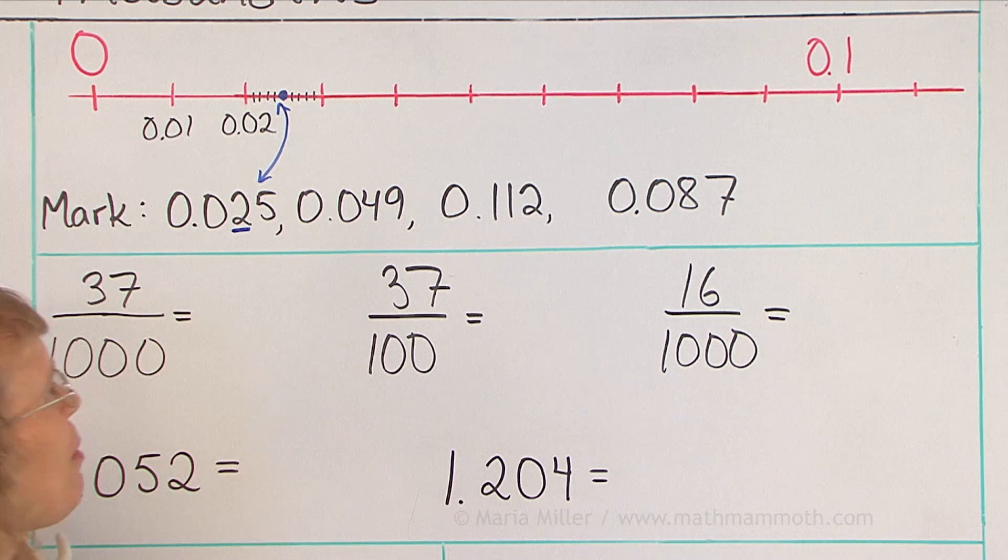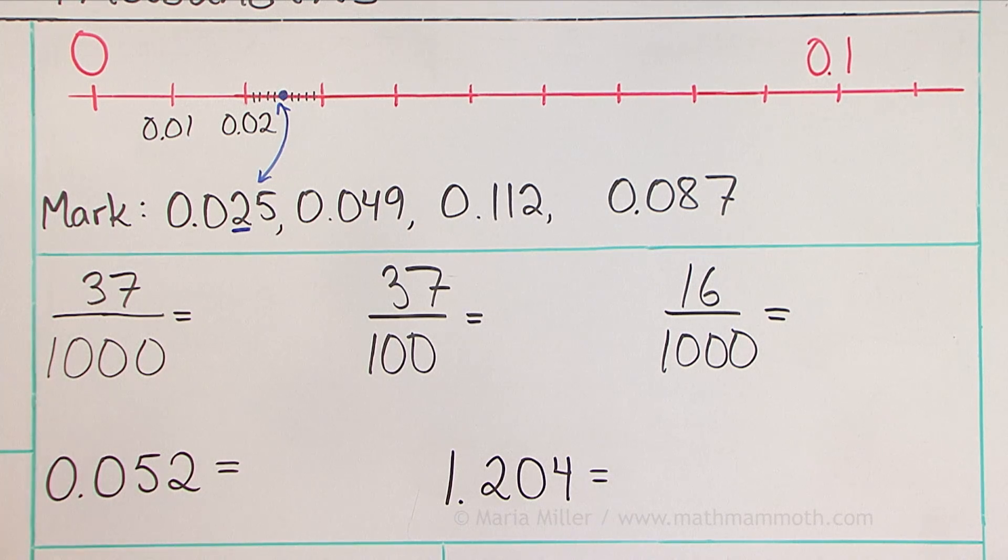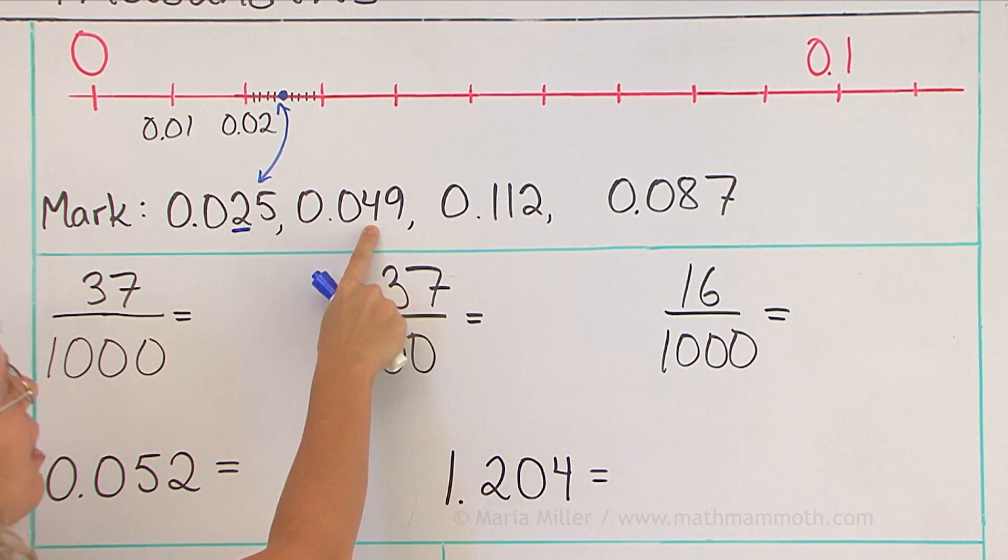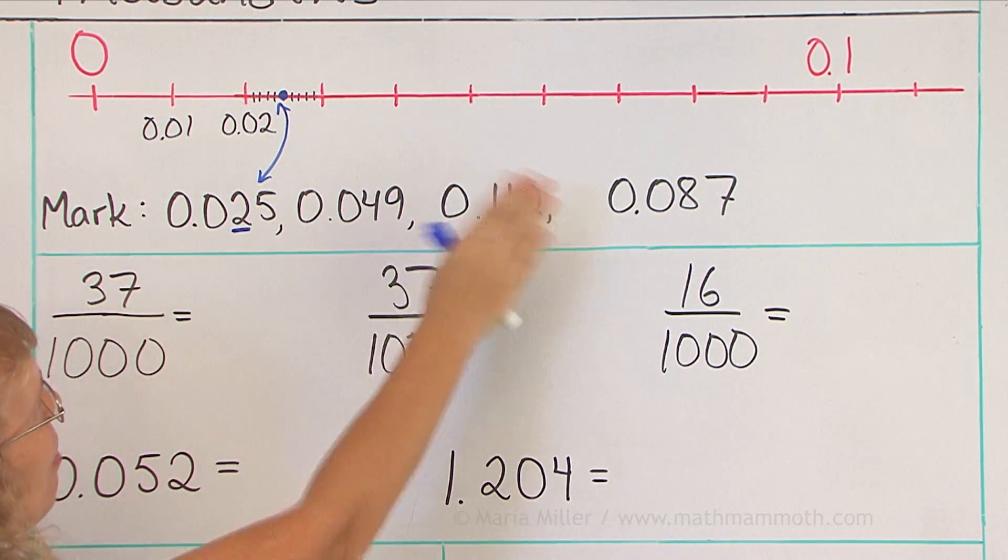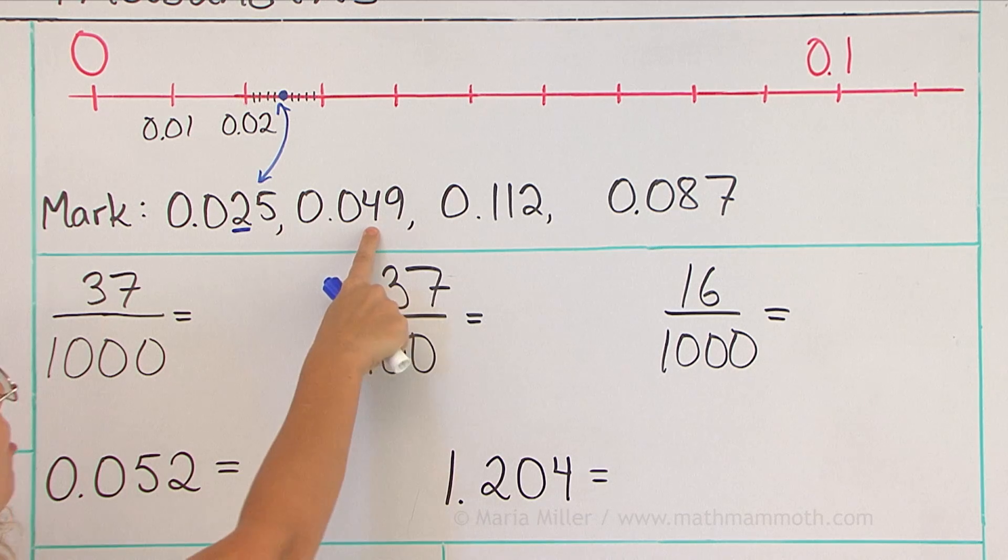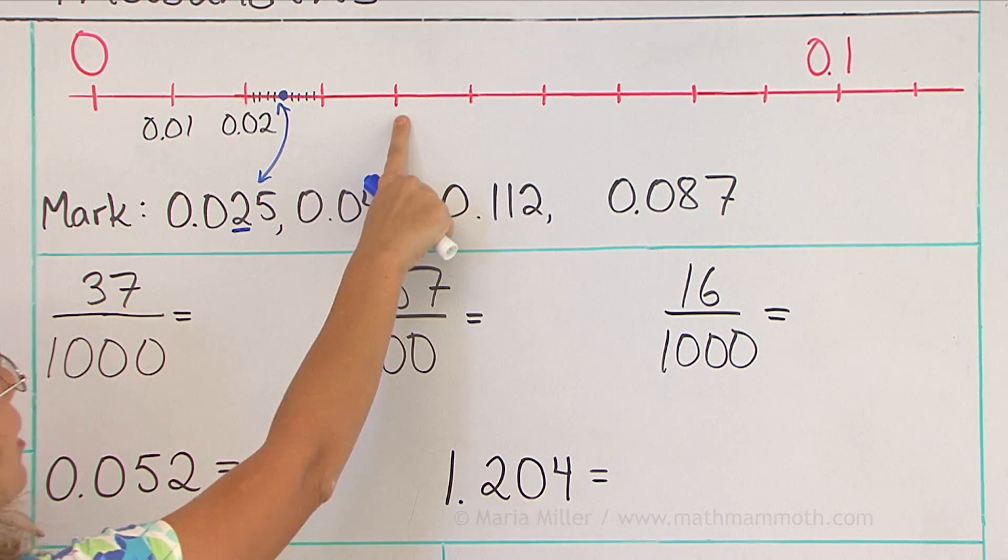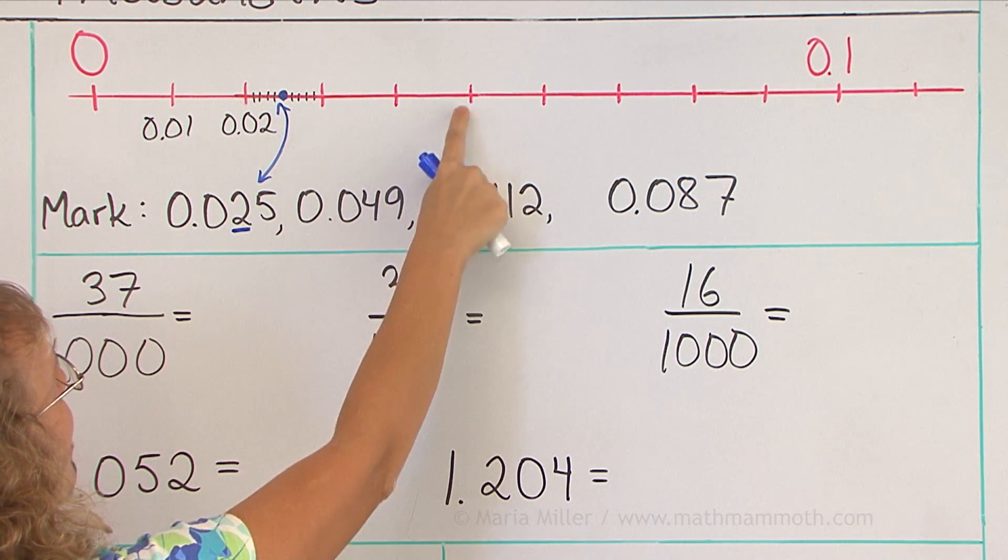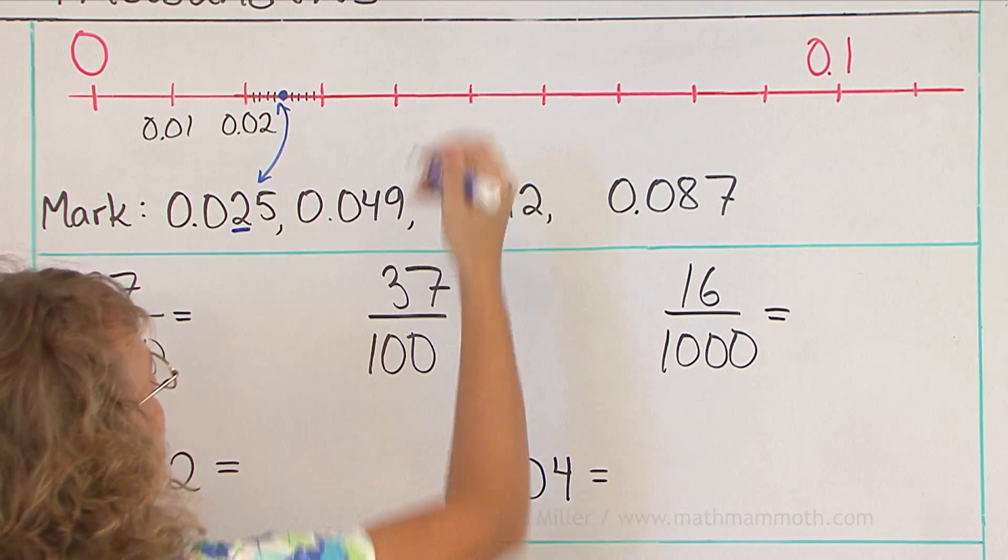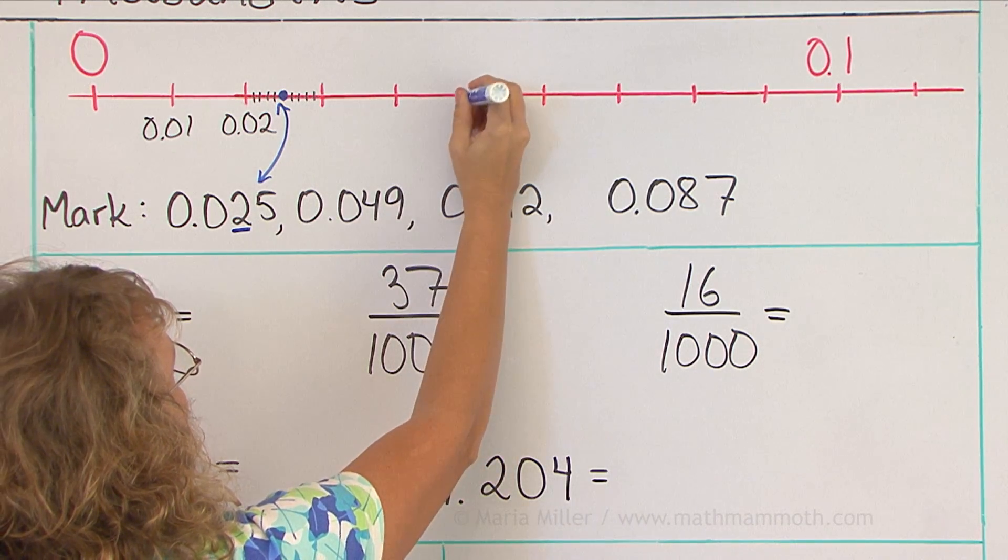Next one. We have forty-nine thousandths. But at the same time it is four-hundredths and nine-thousandths. So I can use that to mark it on the number line. I will find four-hundredths first over here. And then if this was divided into ten little parts, I would go to the ninth line. So it's right there somewhere.